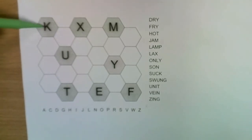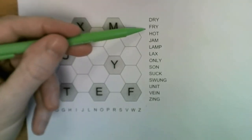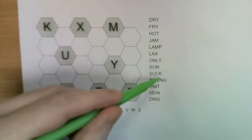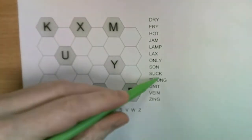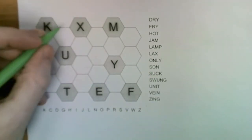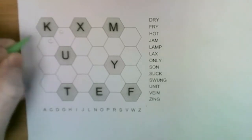Let's look at the K. The word suck contains a K and the letter next to the K is the C, so we know that the C has to go either here or here.